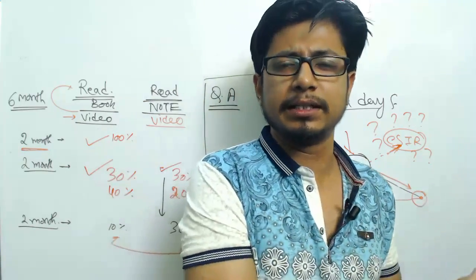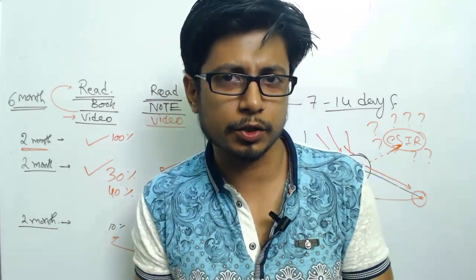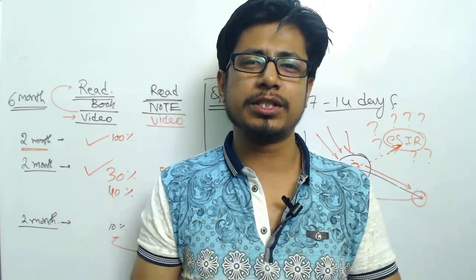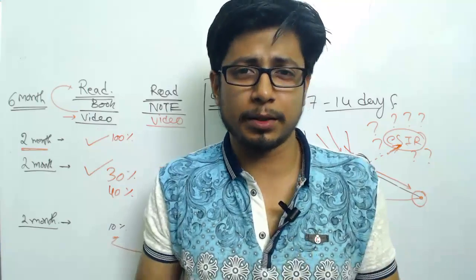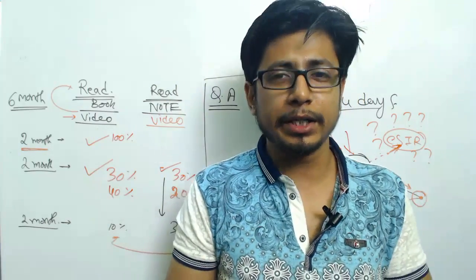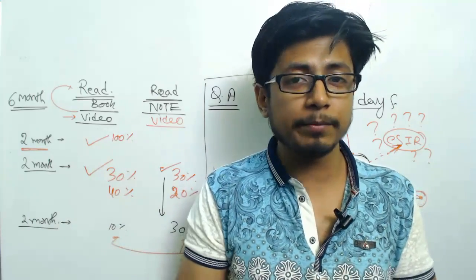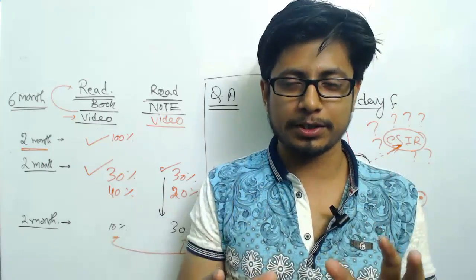But most of the time, the eligibility criteria is the same: approximately 55% score during your masters and a good standing value. If you have all these things, you can easily continue with any of this exam that I'm going to tell you in the second part of this video. So watch the second part of the video to know about your options.